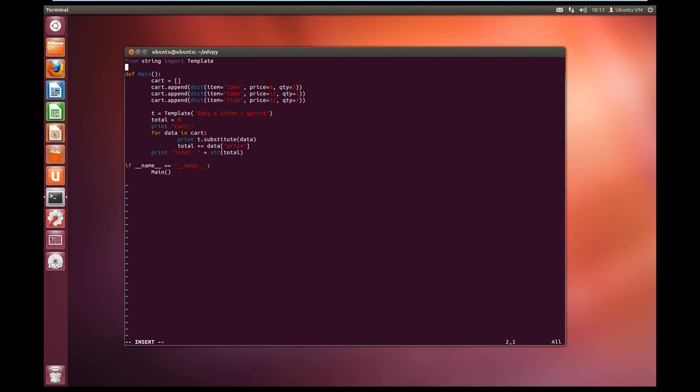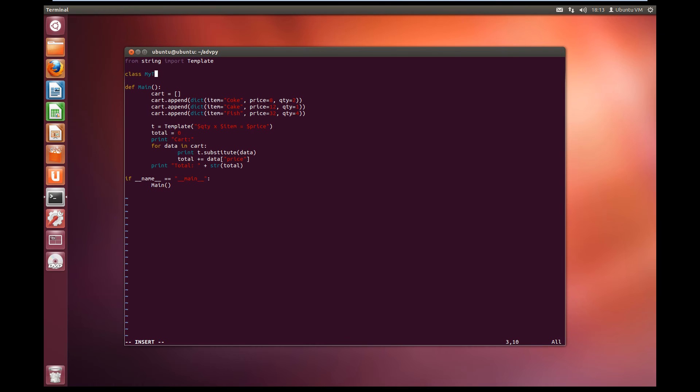So come back, open up our program again. And this time we're going to be overwriting the template class. So we'll create a subclass, class myTemplate, and that'll take a template as the base class. And we're going to override the delimiter variable. So delimiter equals the hash symbol. So now that we've changed the delimiter, we're going to need to change our template. So we're going to use myTemplate instead of template.